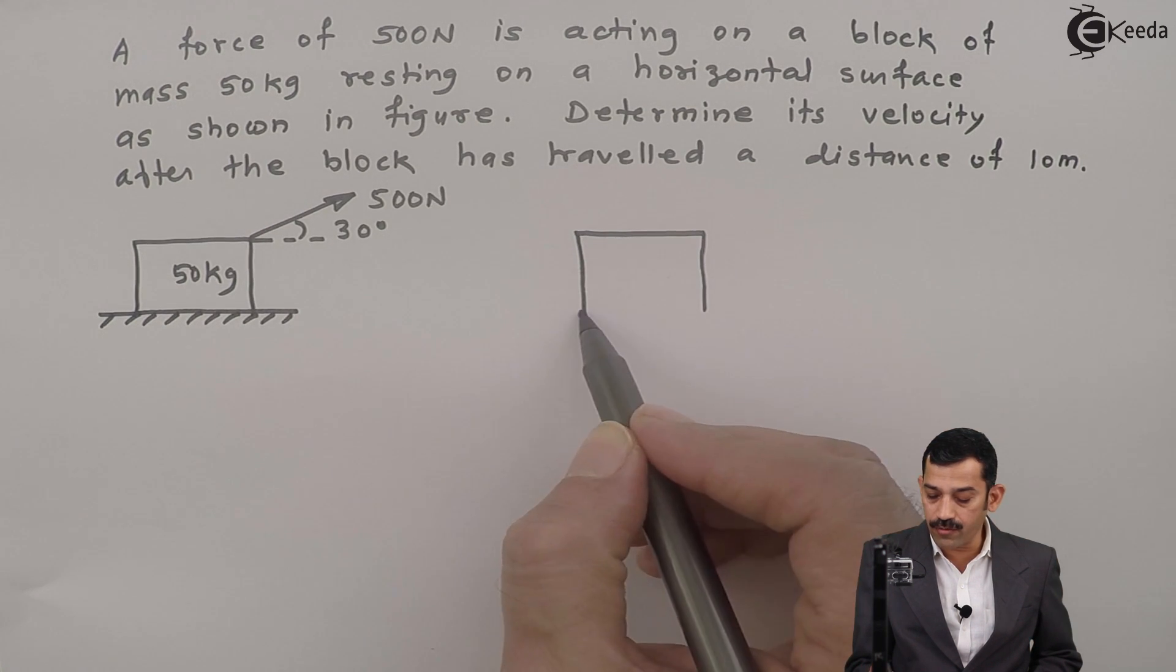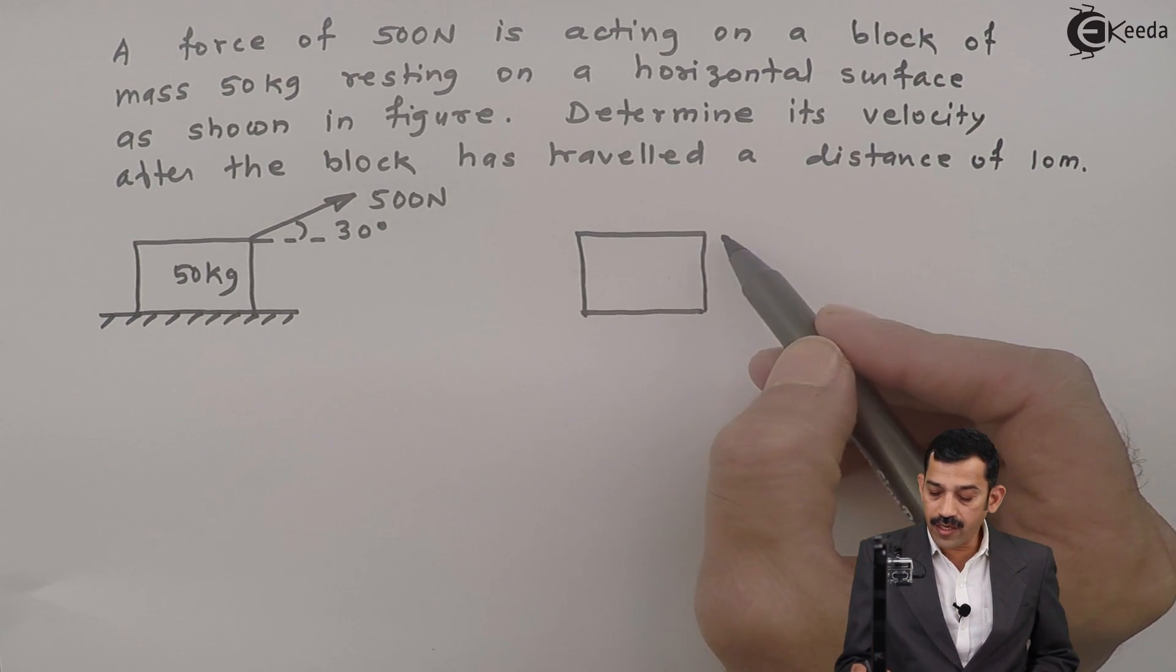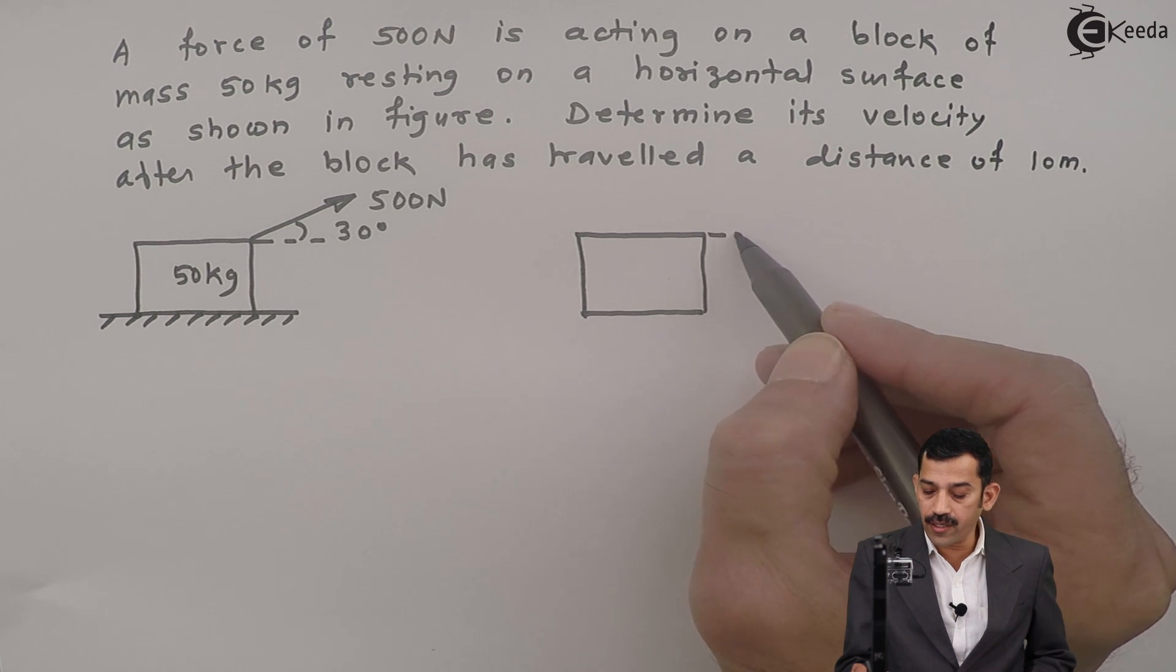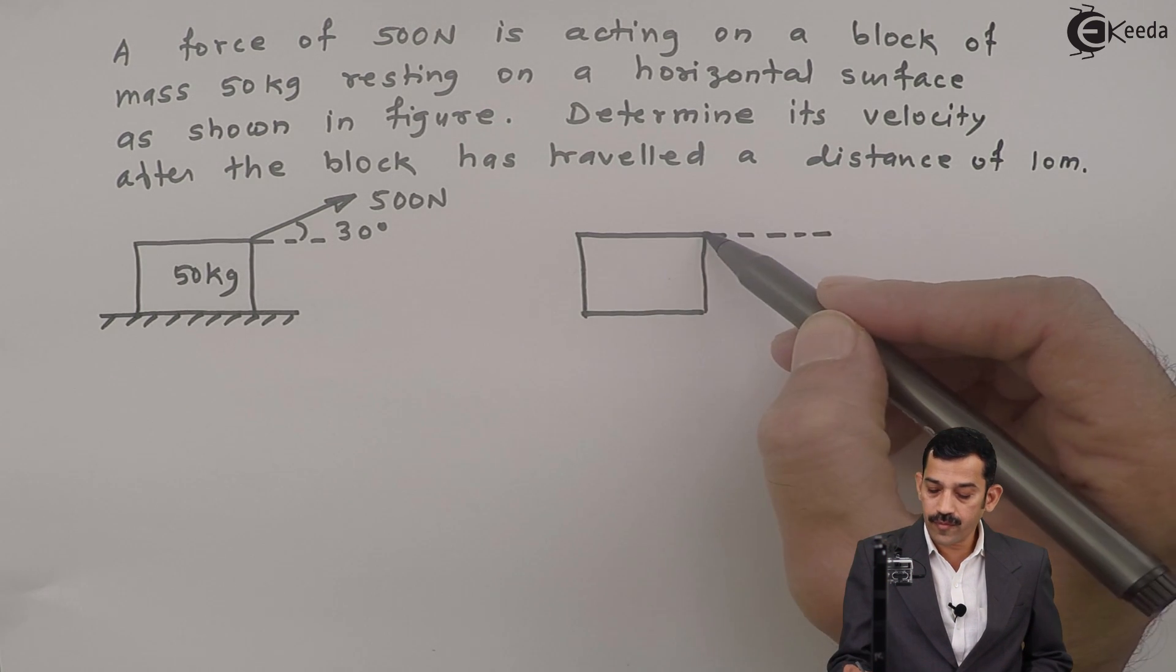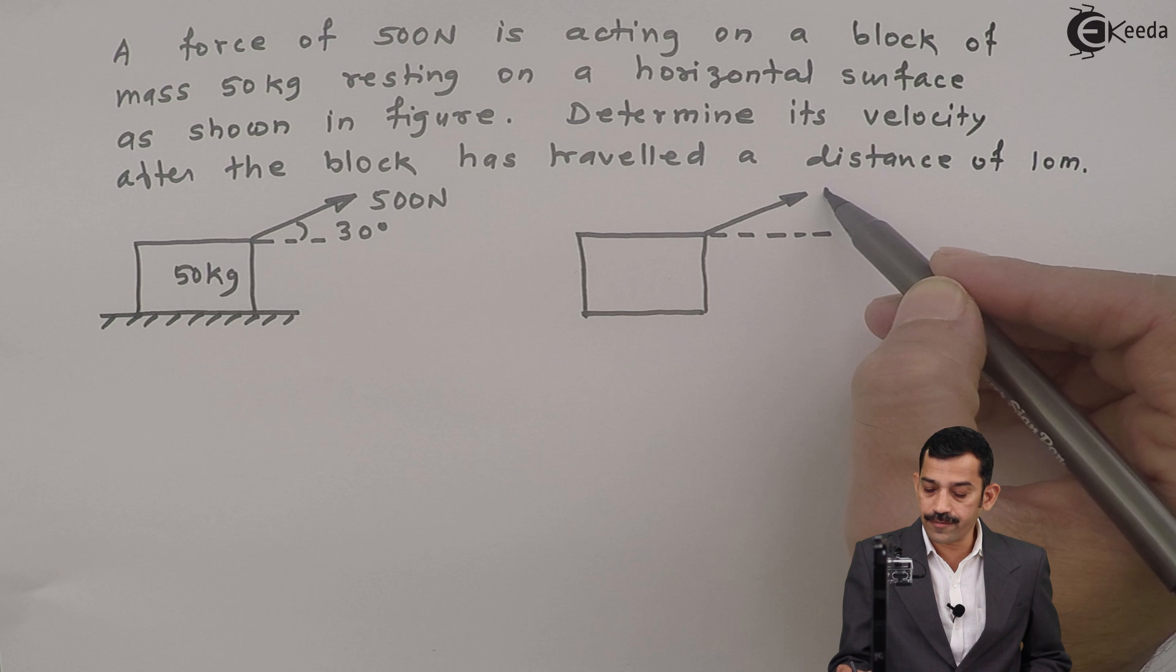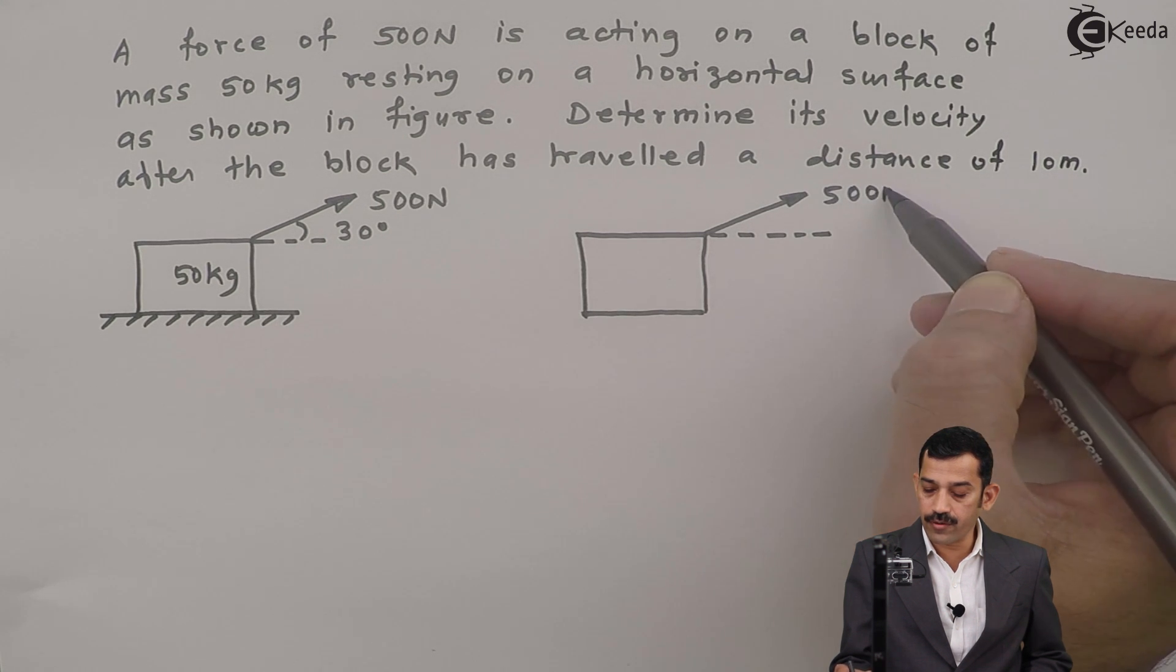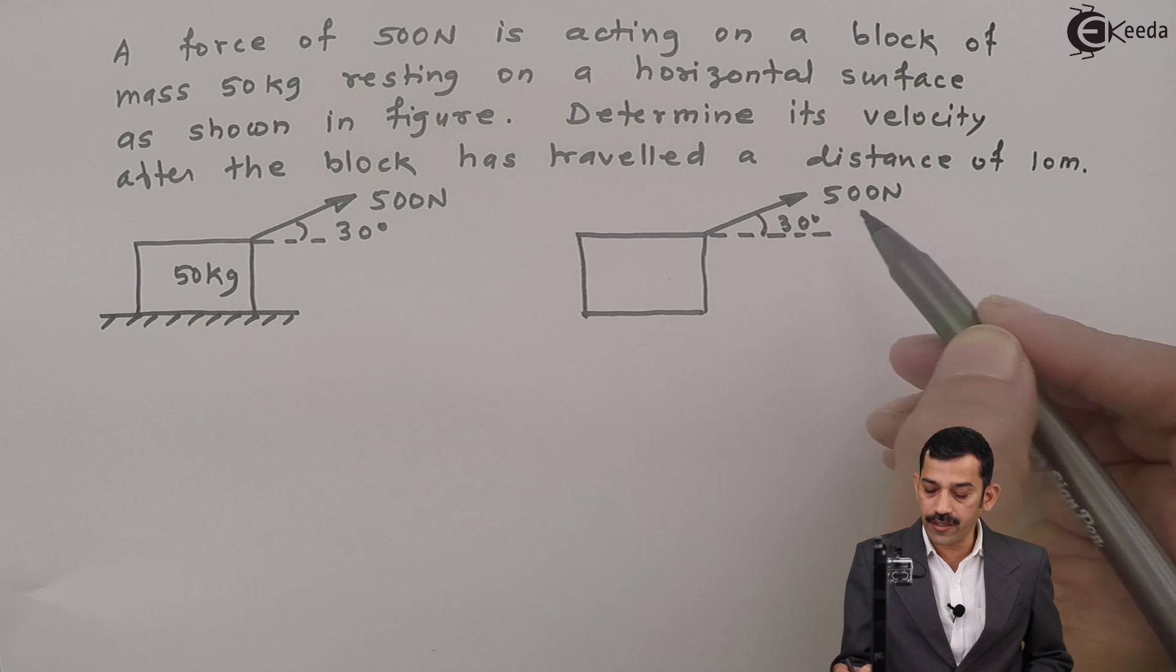External force is 500 Newton, inclined at an angle of 30 degrees with horizontal. This force will represent here 500 Newton. Inclination 30 degrees.